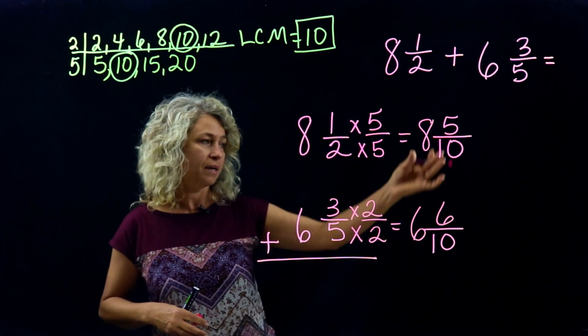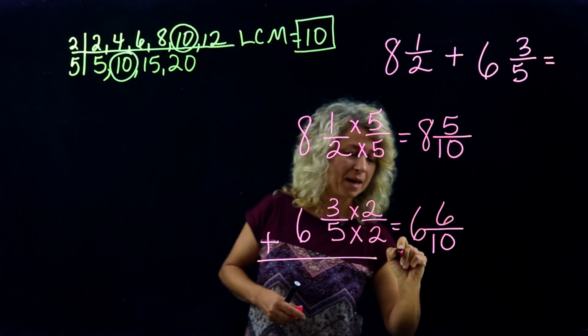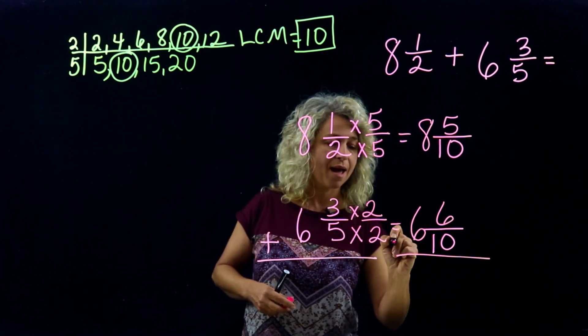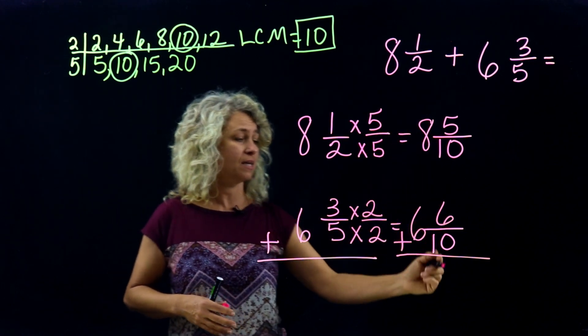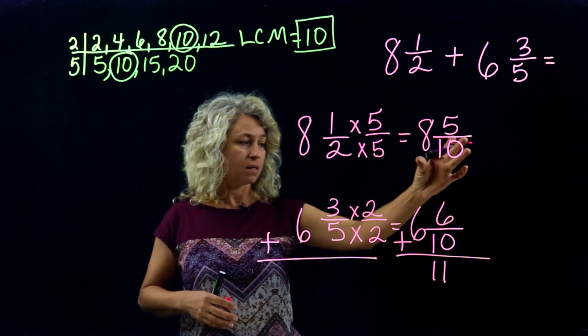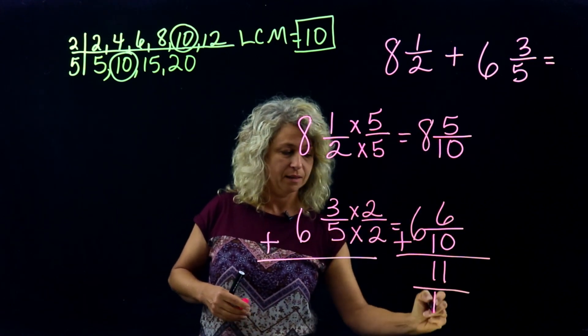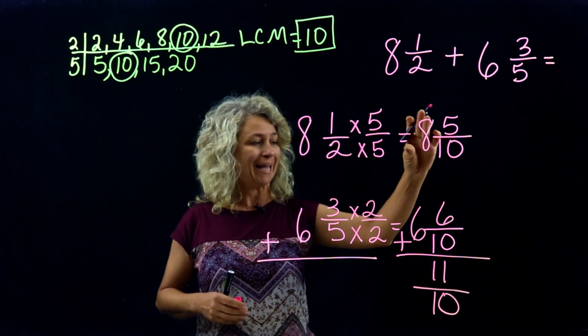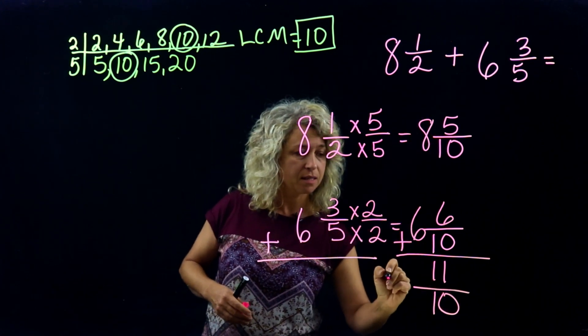Now that my denominators are the same, I can just add. 5 plus 6 is 11. The denominator always stays the same. 8 plus 6 is 14.